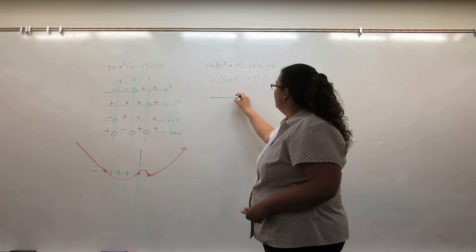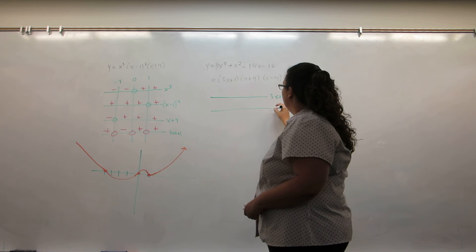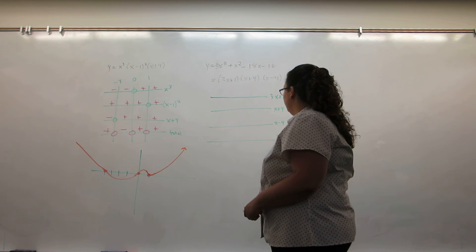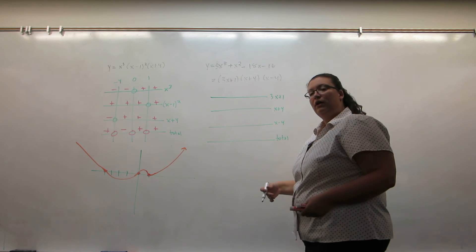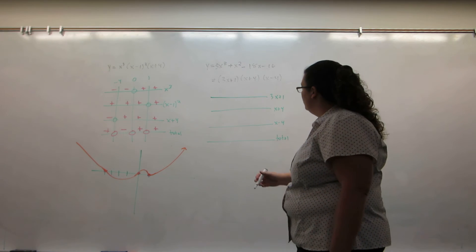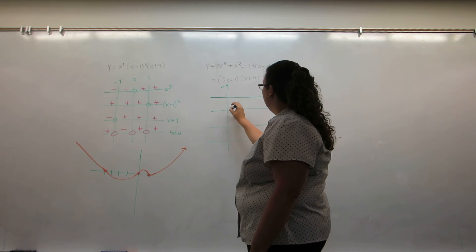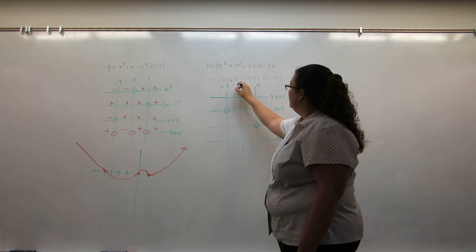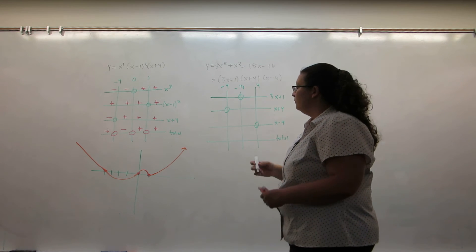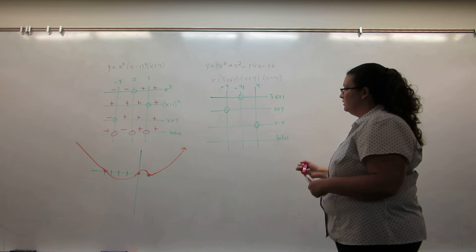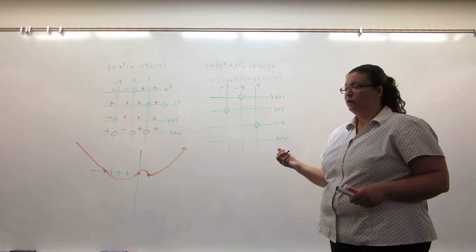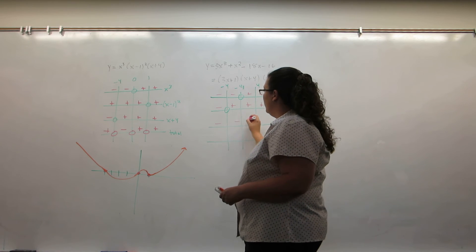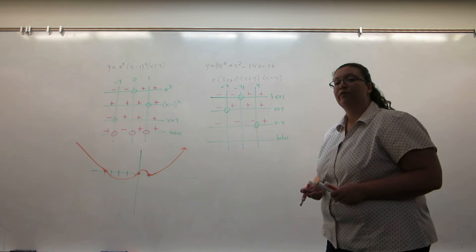So I'm going to do my sign chart with every factor getting a horizontal line. And then one for the total. I'm going to do a vertical line everywhere something is zero. So I have one at negative four, one at positive four, and one at negative one third. Then I put in my pluses and minuses. Nothing is squared here, so everything is just negative to the left and positive to the right of wherever its zero is on that line.